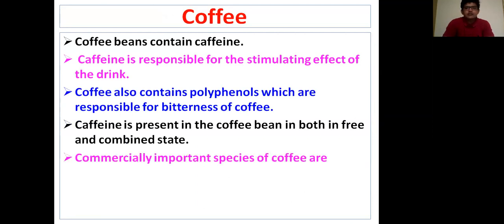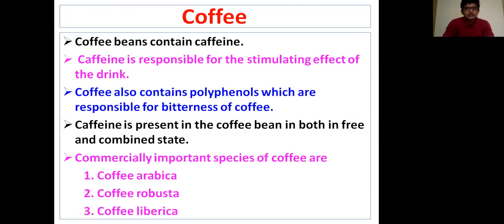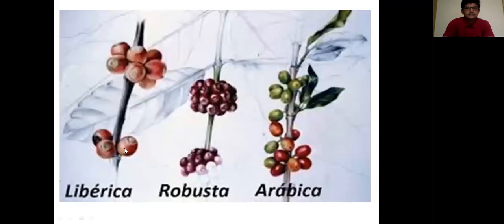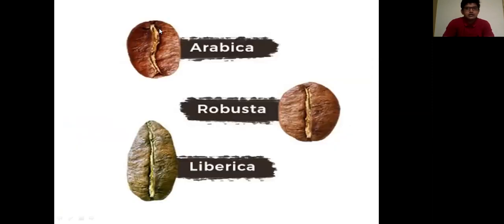Commercially important species of coffee are Coffea arabica, Coffea robusta, and Coffea liberica. These are the three main species of coffee which are commercially available. There is a slight difference in the fruit of each species. This is the coffee bean of species arabica, this is of species robusta, and this is of species liberica — these three are the important commercially available species.